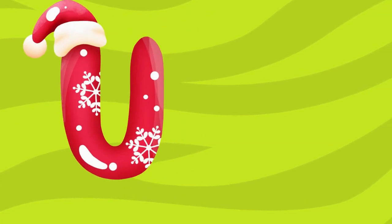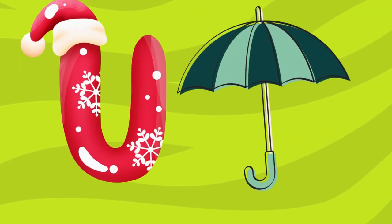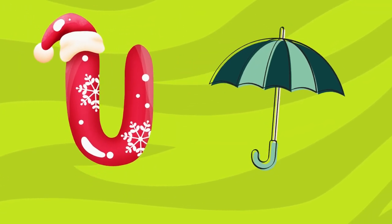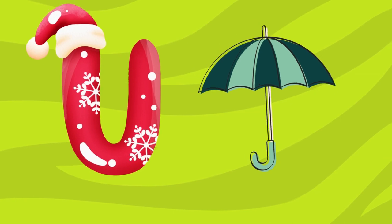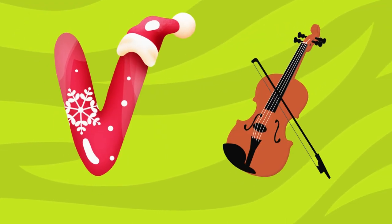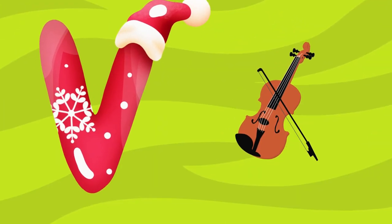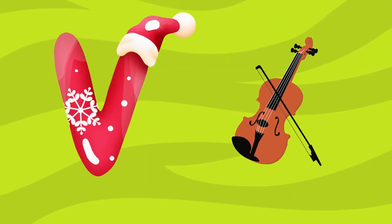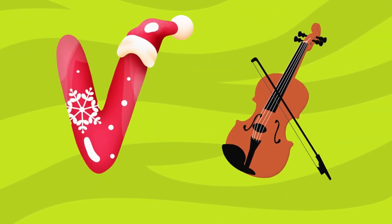U is for umbrella, u-u-umbrella. V is for violin, v-v-violin.